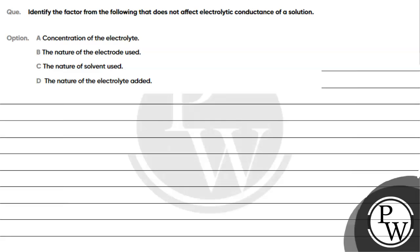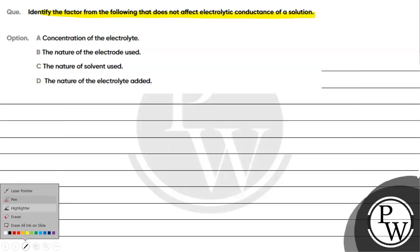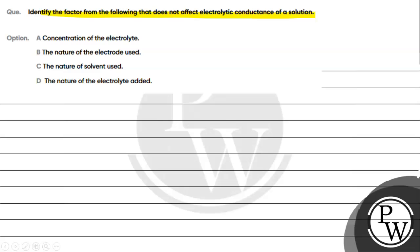Let's read this question. The question says: identify the factor from the following that does not affect electrolytic conductance of a solution. Option A: concentration of the electrolyte. Option B: nature of the electrode used. Option C: nature of solvent used. Option D: nature of electrolyte used.